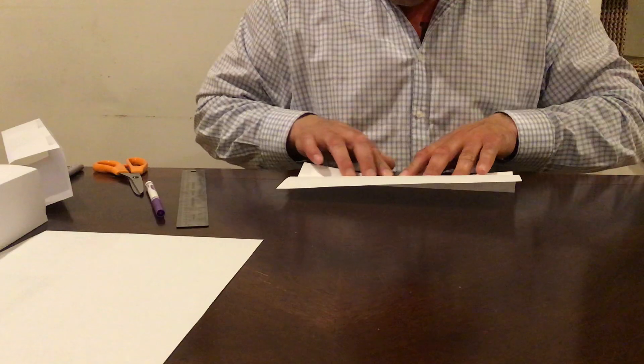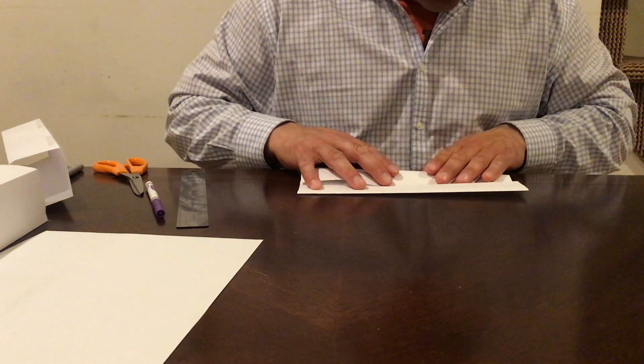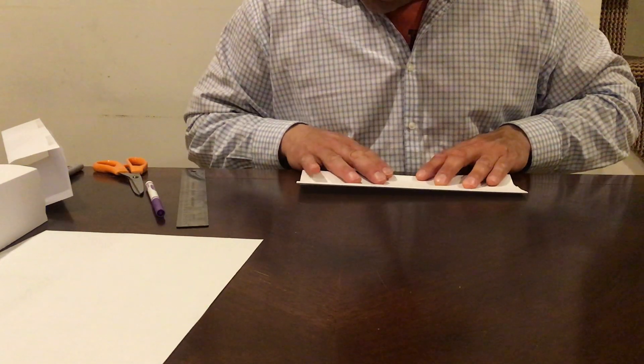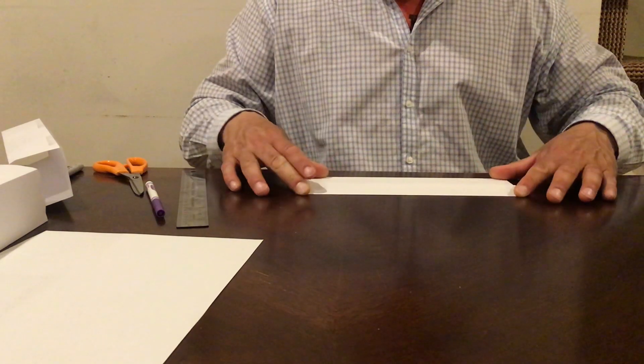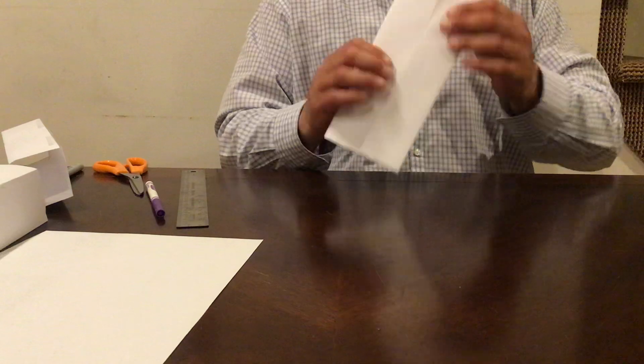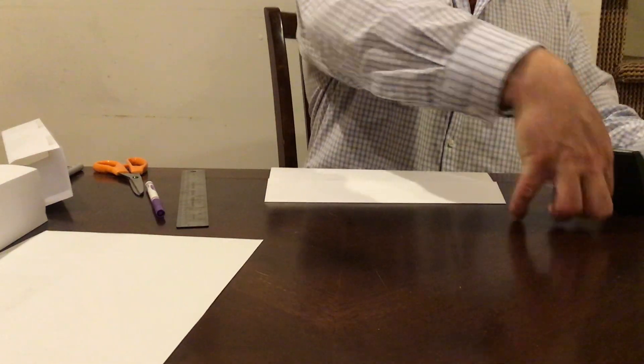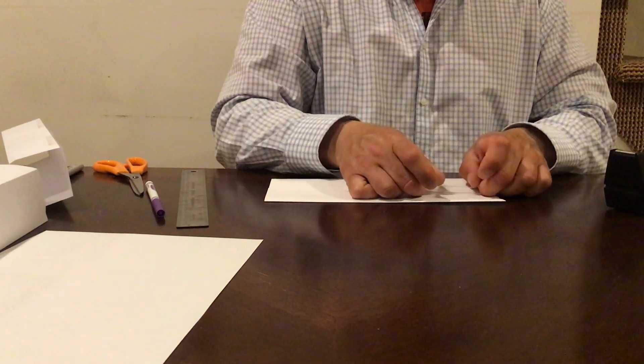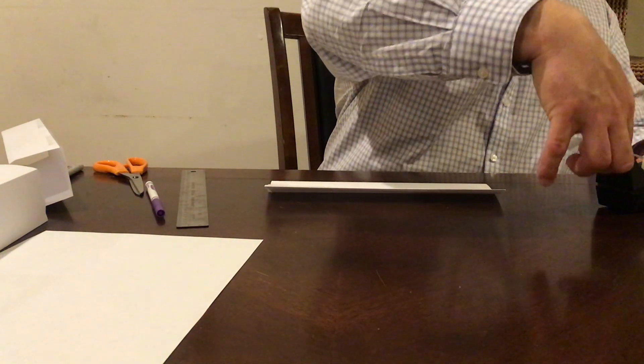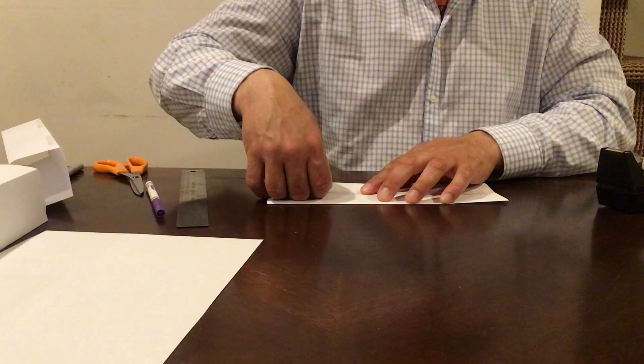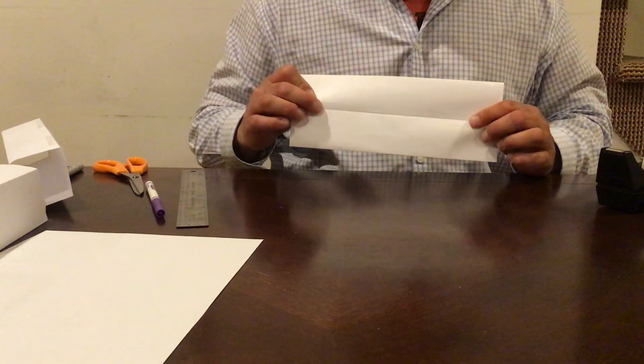Before you do anything else with the paper, you're going to crease both edges. Lay it flat, now it's about half the size. You're going to rip yourself two pieces of tape and tape right where the two pieces fold together, the two edges where they come together along that middle seam. Put a piece of tape right across the middle of them.